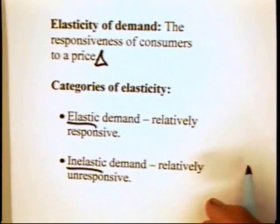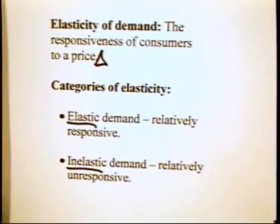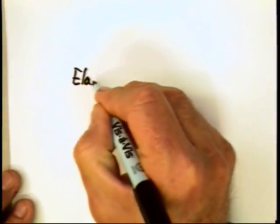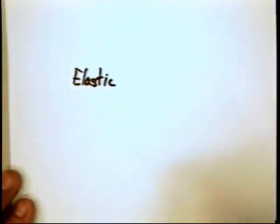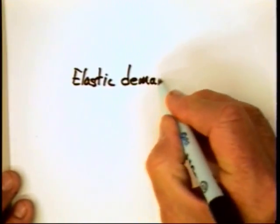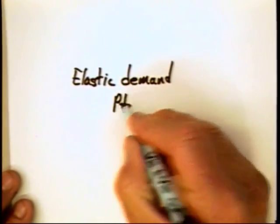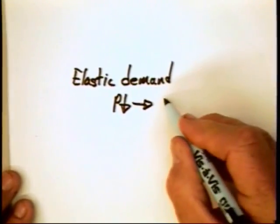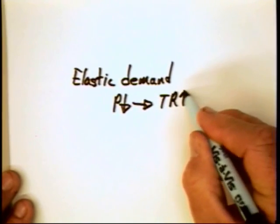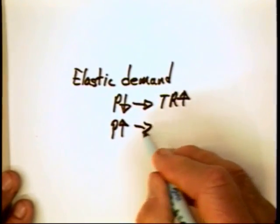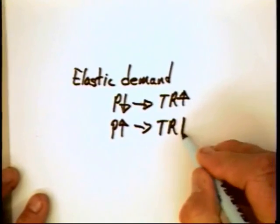These definitions of elasticity of demand don't get us very far. But we noticed in the previous graph that elasticity can feed into an effect on total revenue. We can distinguish elastic and inelastic demand by what happens to total revenue. Under an elastic demand, if the price goes down, quantity is going to change by so much that total revenue is going to go up. By the same token, if the price goes up, the responsiveness of consumers is going to be so great that total revenues go down.